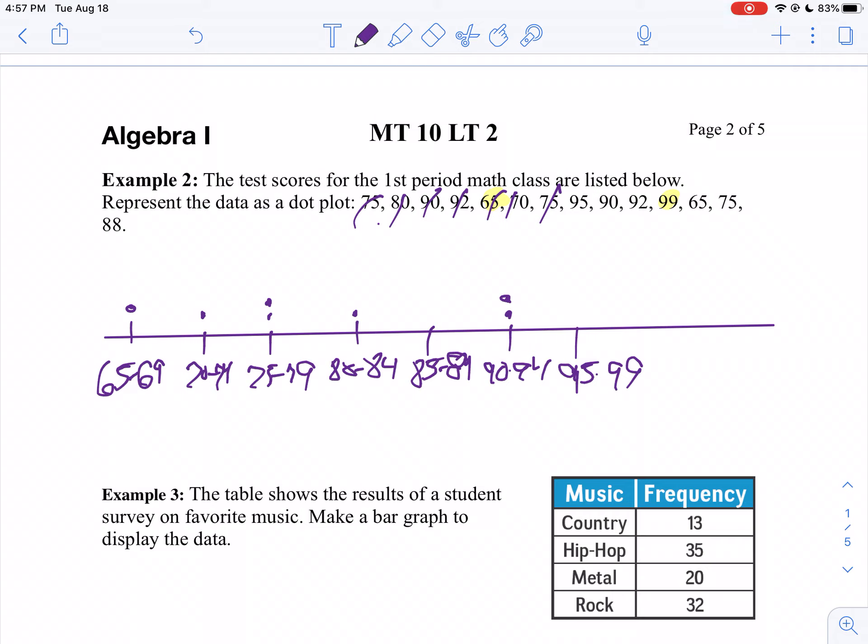95. 90. So you have three of them now. 92. 99. 65. 75. And 88.